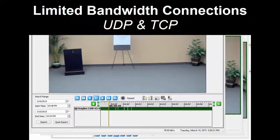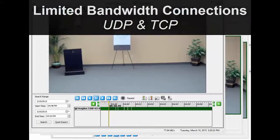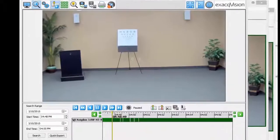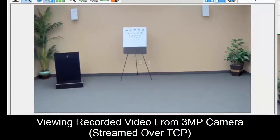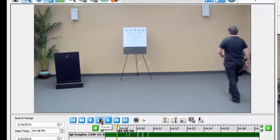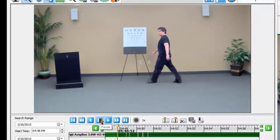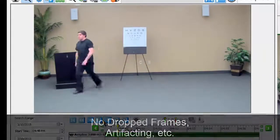In this video we're going to take a look at the effects of UDP and TCP when we have bandwidth limited connections. We're looking at recorded video from a 3-megapixel camera. This was streamed over TCP. Go ahead and hit play here and we can see as Derek walks through the scene, not really dropping any frames.